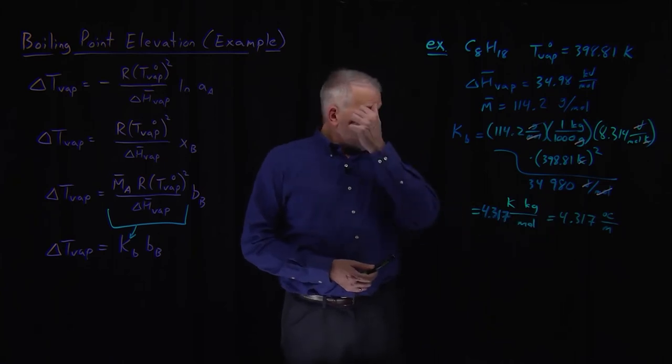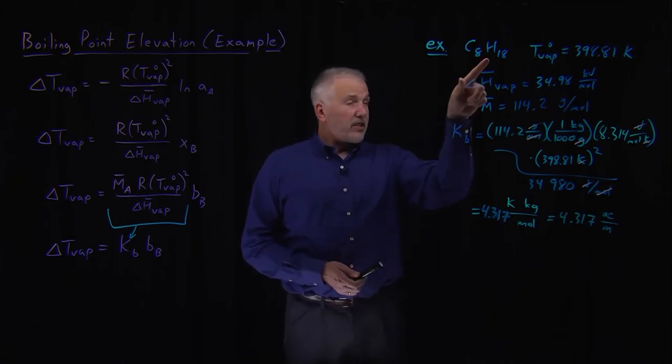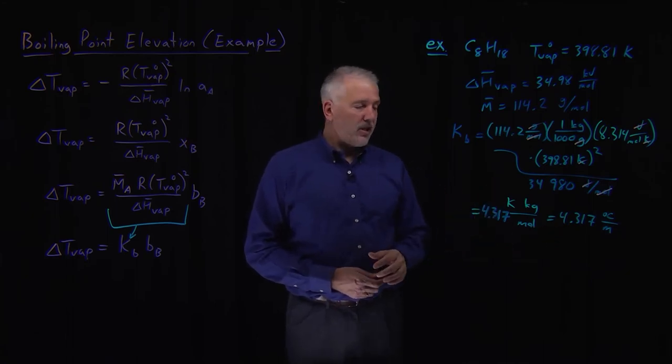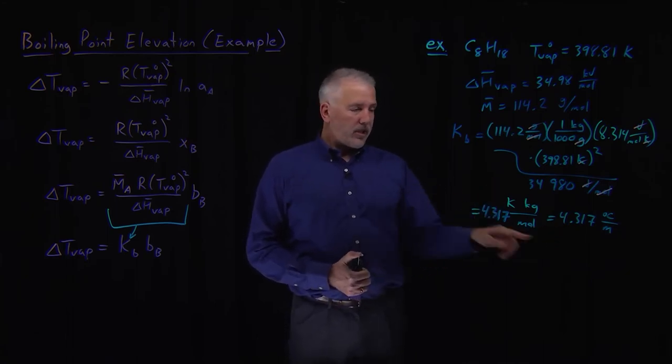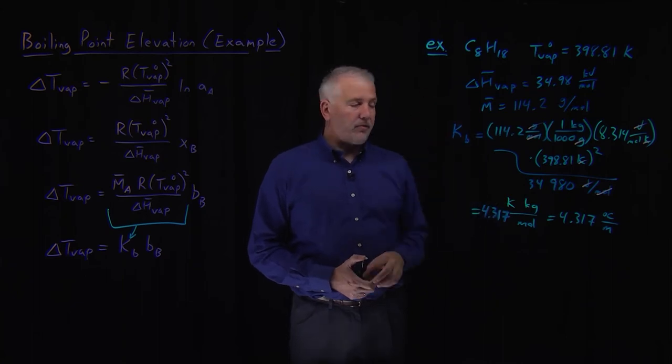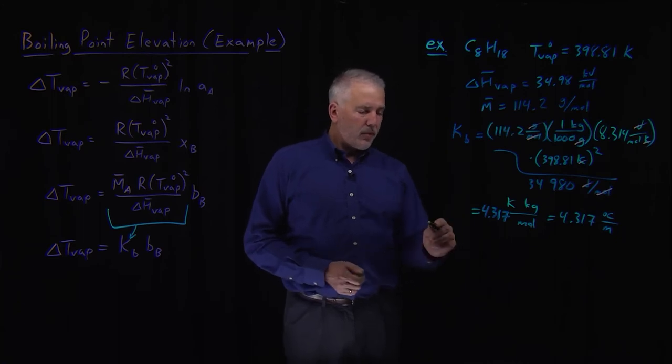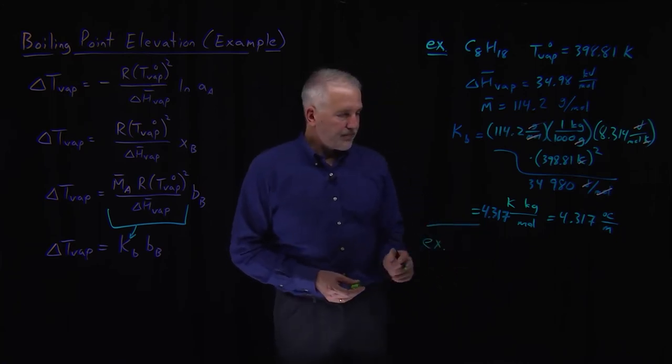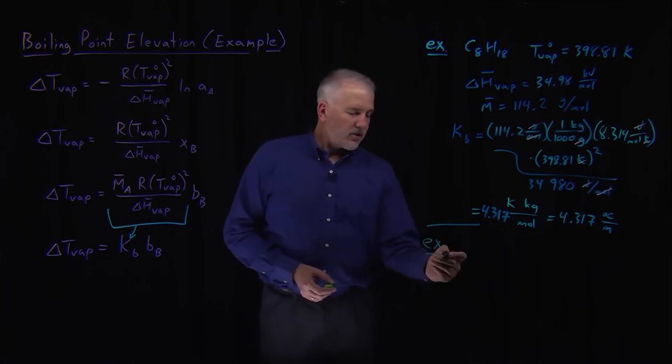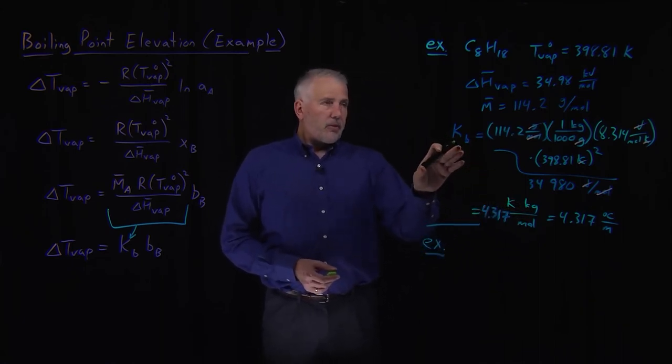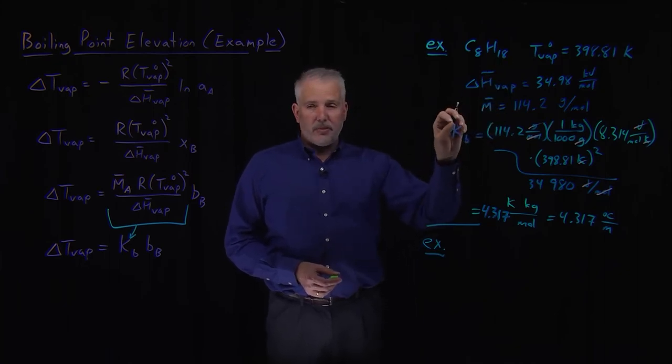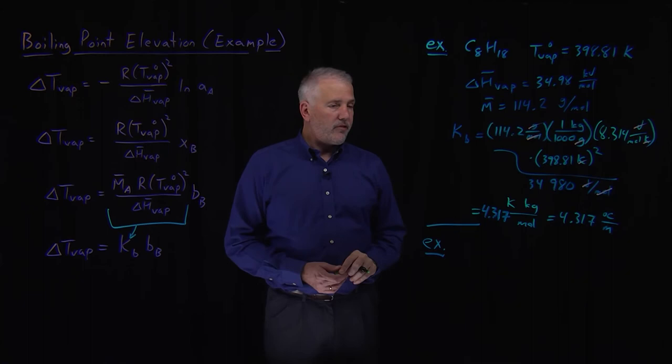So that number is fairly large. I can change the boiling point of octane by four degrees Celsius for every one molal of solution that I prepare. And that boiling point gets elevated, gets increased by four degrees every time I increase the concentration by one molal. I'll point out that this boiling point elevation constant, clearly I've used values for octane. That value is going to be specific to octane. It would be different for every solvent.